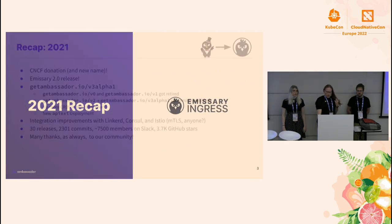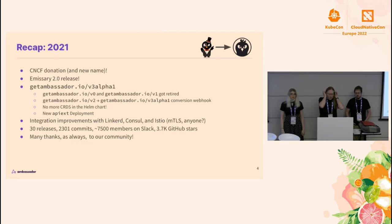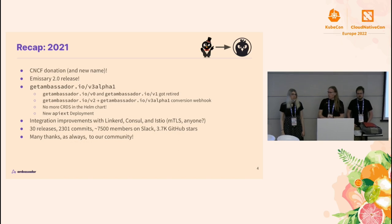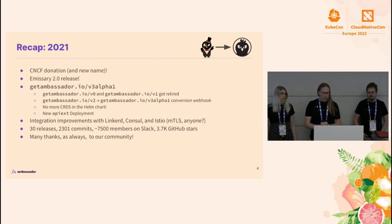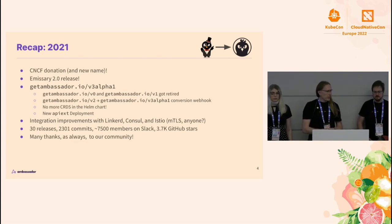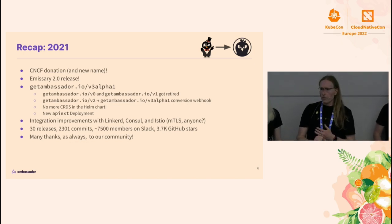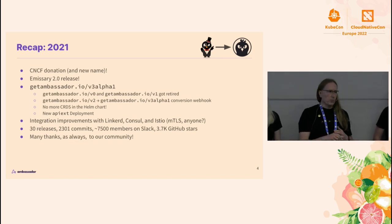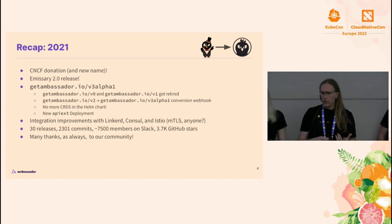2021 was kind of an interesting year for us. We donated Emissary to the CNCF, got a new name in the process. We did the Emissary 2.0 release where lots and lots of things changed. We made a lot of changes to the input language where we retired getambassador.io v0 and v1. We switched fully to v2, introduced v3 alpha 1, and also enabled the system to automatically convert between v2 and v3 for you to make the upgrade path smoother.